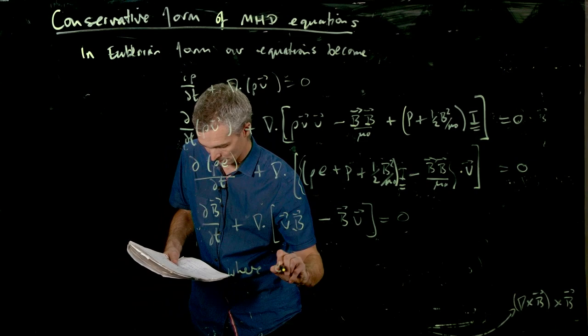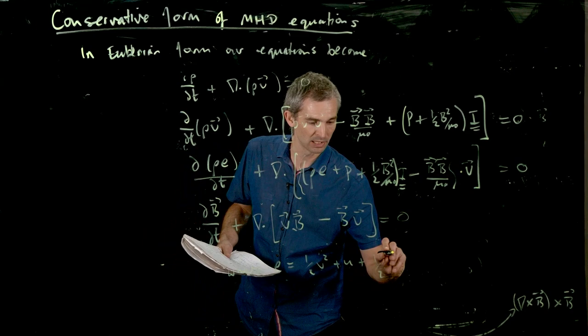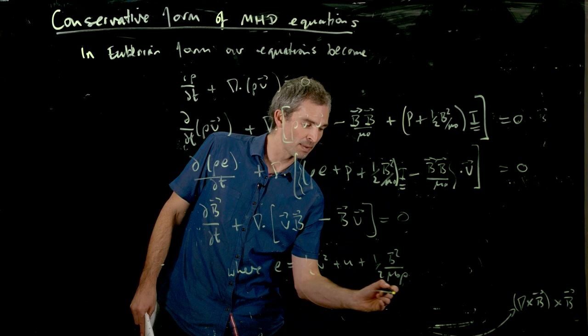All right. So where, the energy, is a half v squared, plus u, plus half b squared on mu naught rho. All right. So our energy includes now a magnetic energy term. And we can see that's going to be useful a bit later on. So that's your MHD equations in conservation form. Thanks.